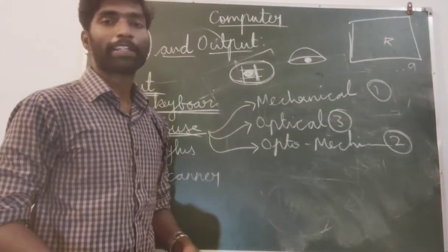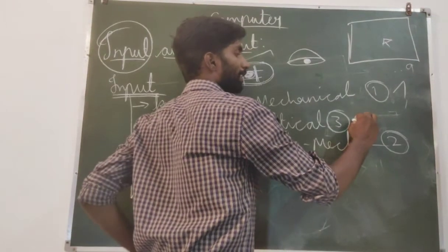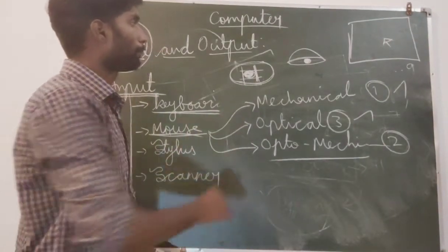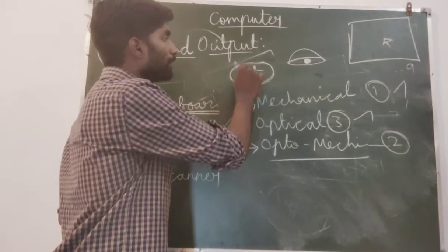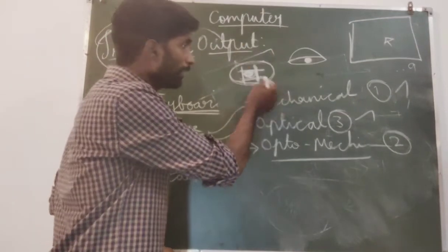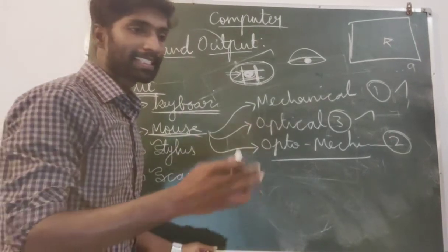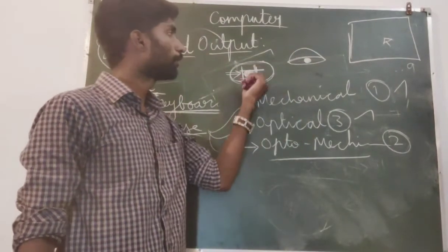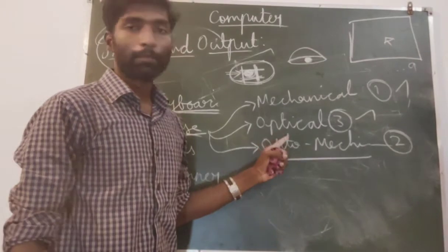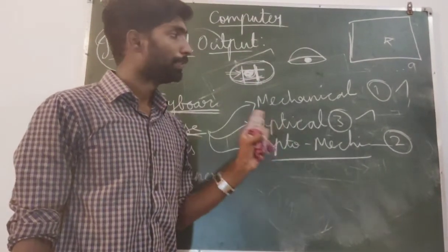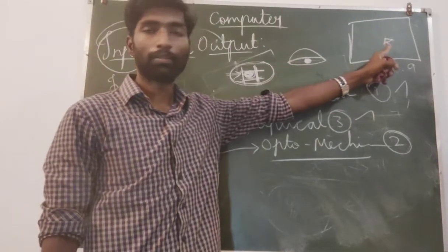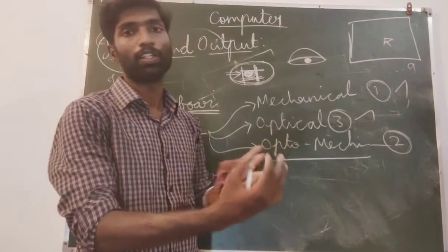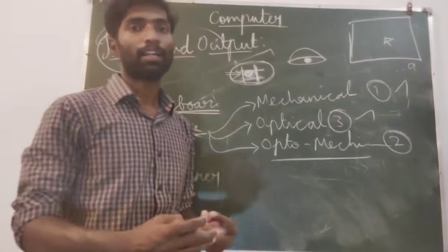At last is optomechanical. This one is a ball, this one is a sensor, and optomechanical means what? Optomechanical means the ball will be there. Instead of these four sides, on the ball there will be sensor light. When sensor light is moving, this mouse cursor will move. Only this is the difference. Mechanical mouse - inside the ball will be there, four side harder component will be covered. Optical mouse - only sensor will be there. Depend on your sensor movement, a mouse arrow will move. Optomechanical means the combination of this ball and the sensor is called optomechanical.